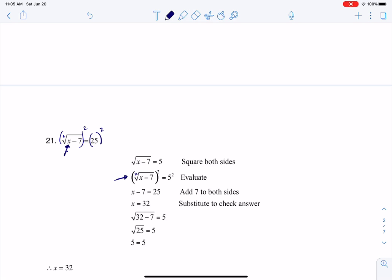And then because this is a square root and this is a square here, these are going to cancel and that leaves me with the left side of just x minus 7 and 5 squared, well 5 times 5 is 25 and I add 7 to the other side and there's my answer.